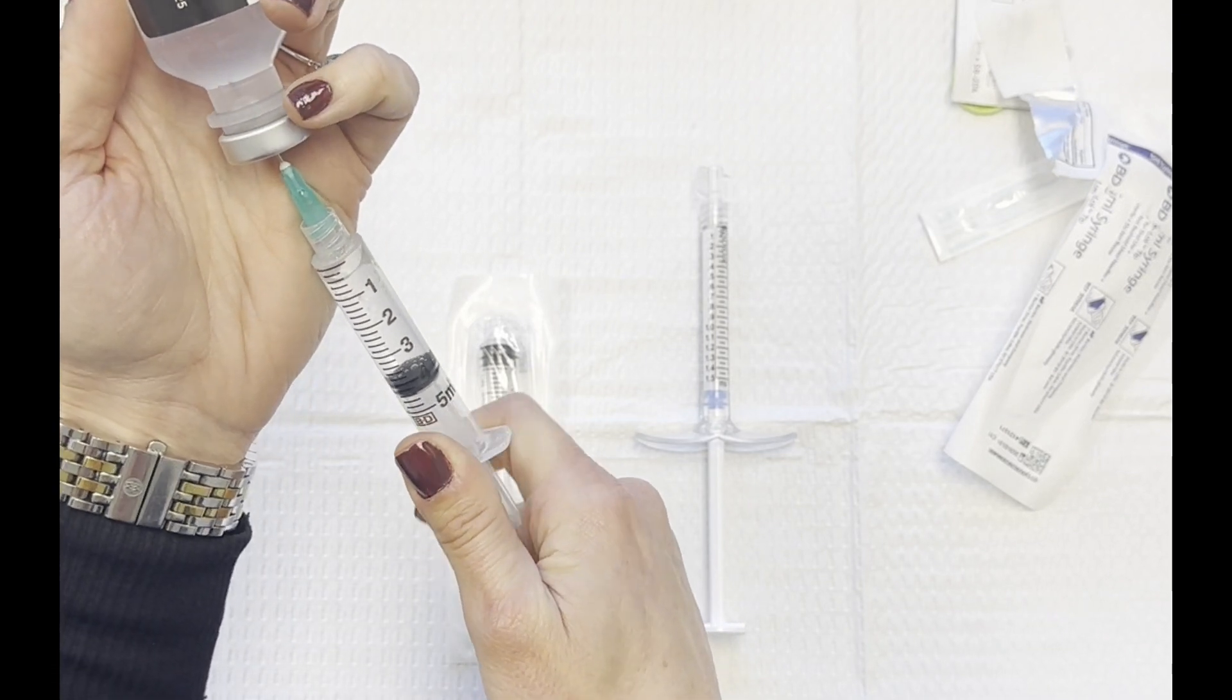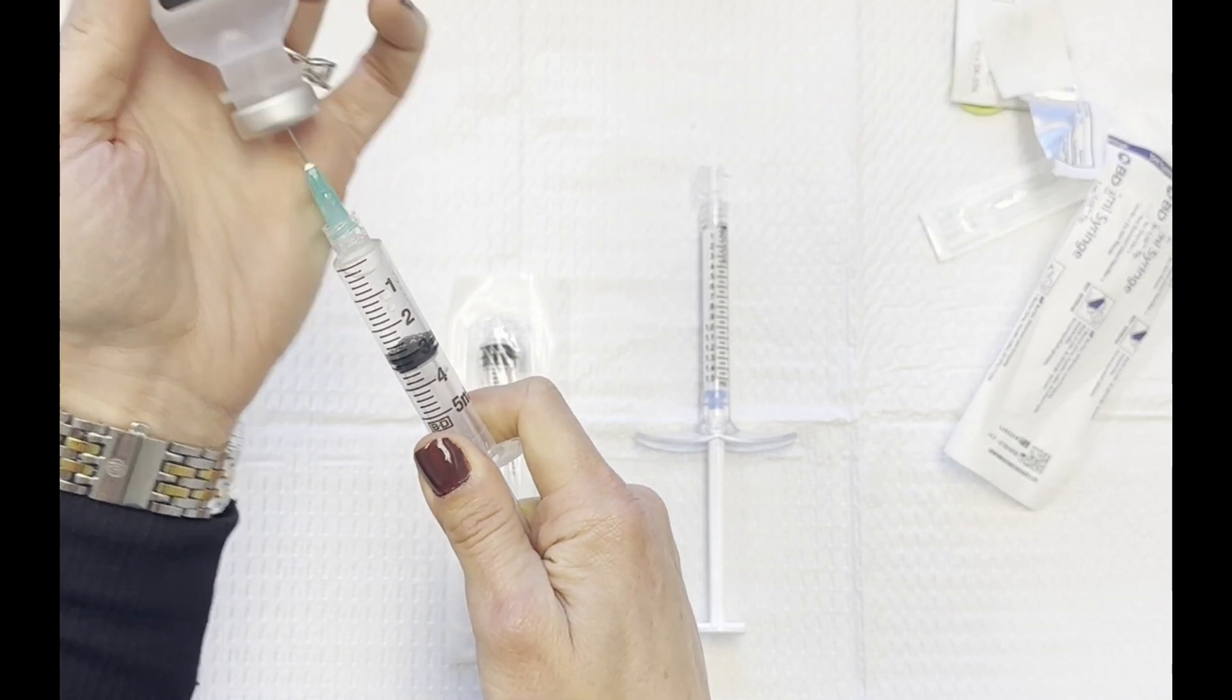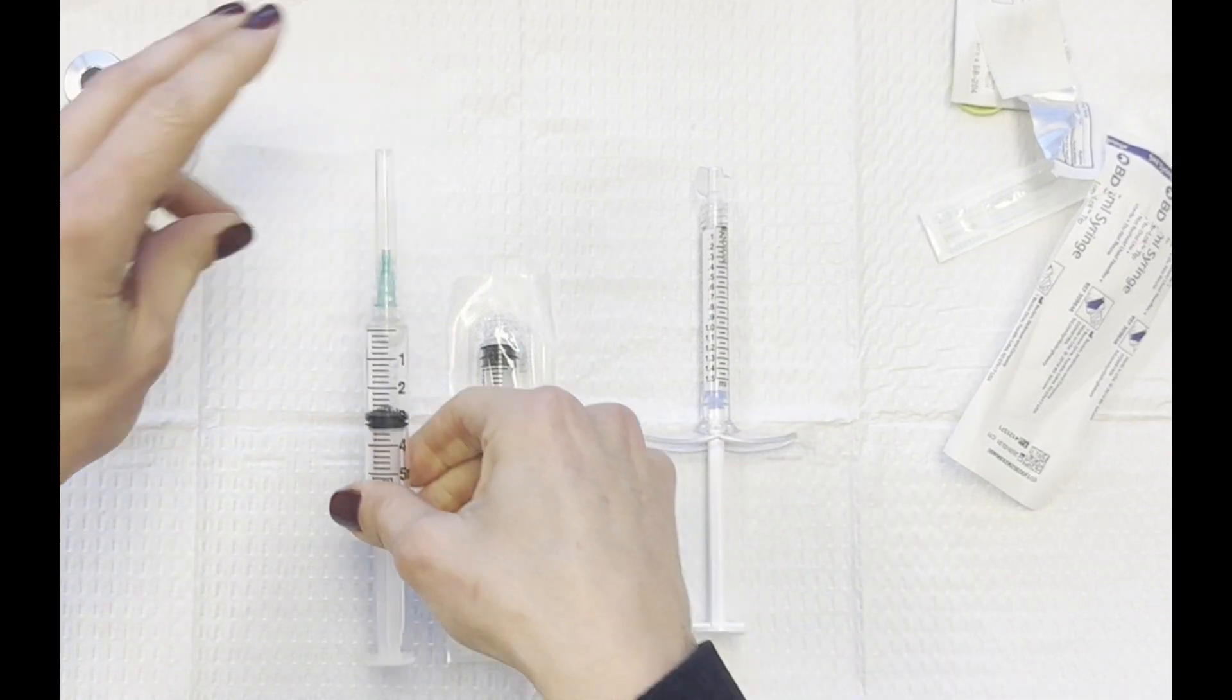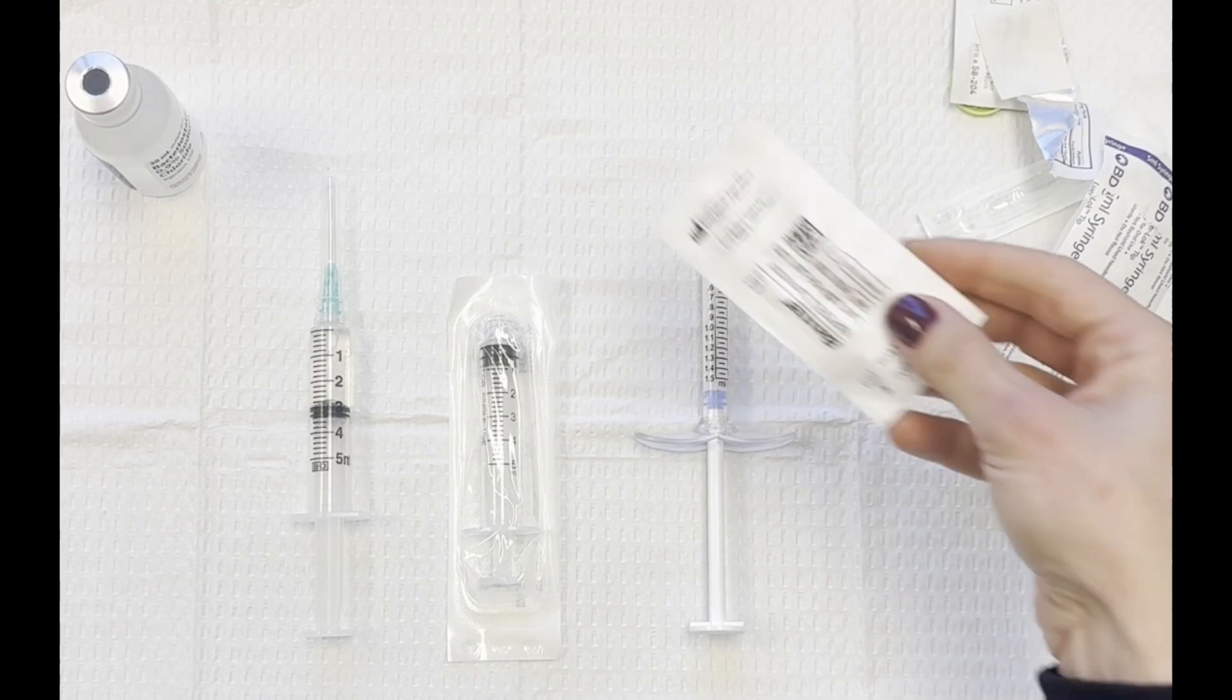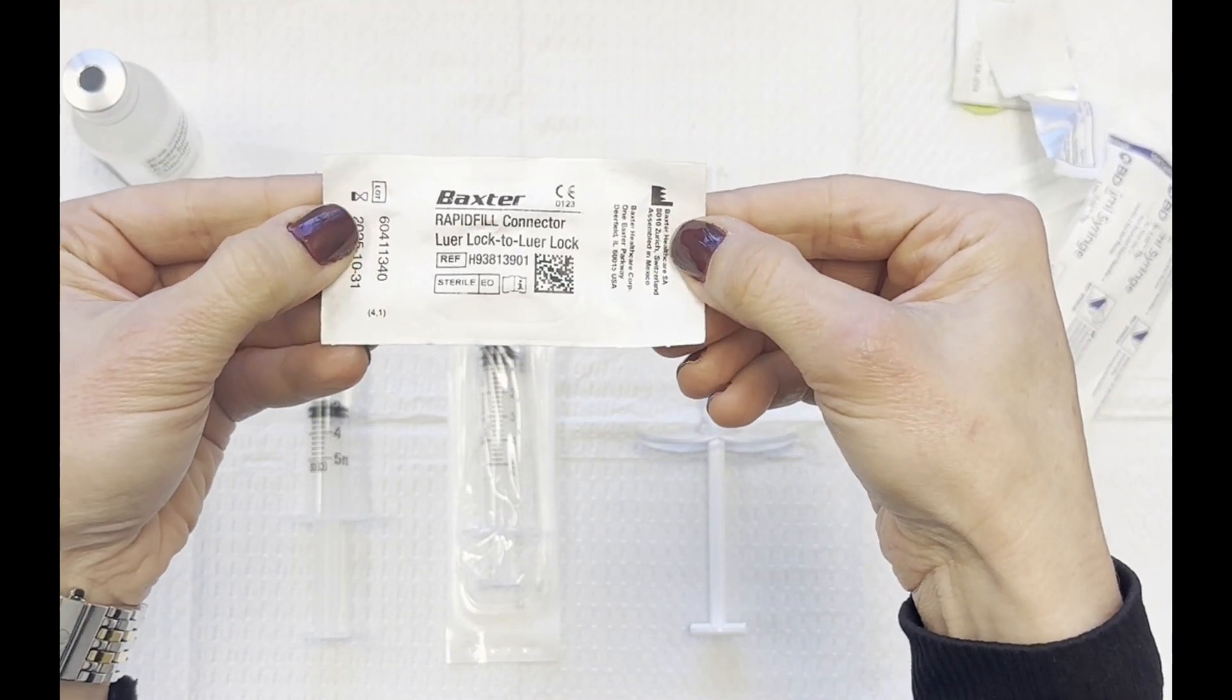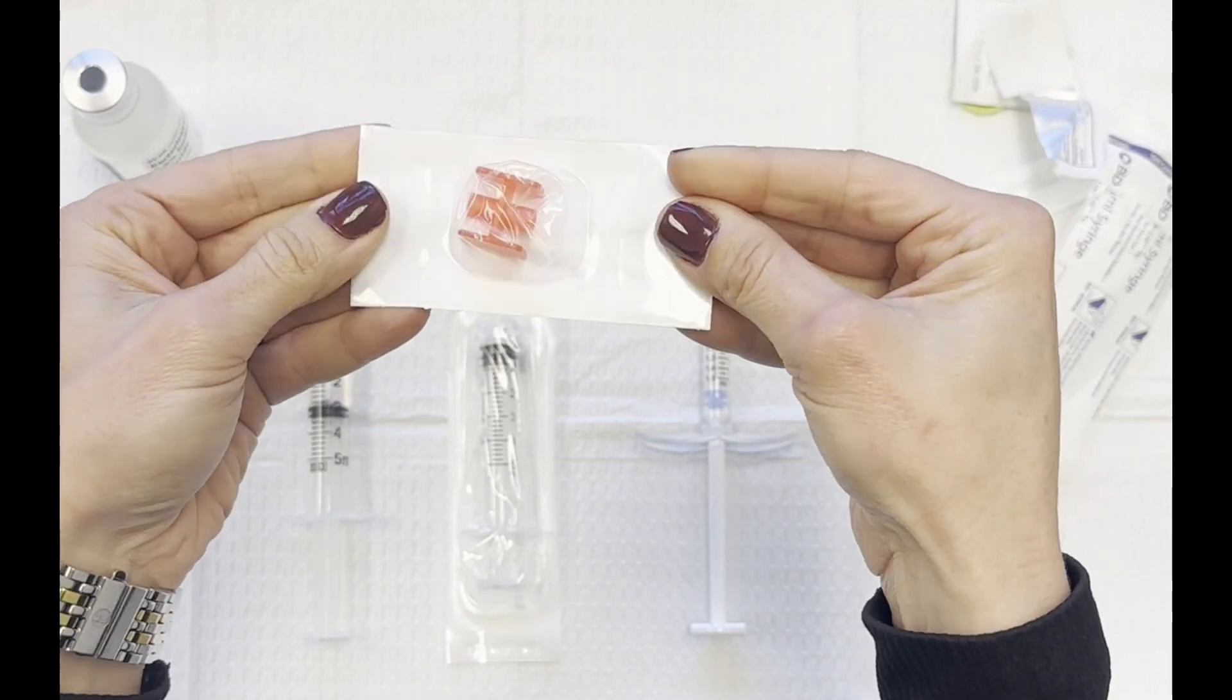And then I'm going to grab my Luer Lock, and these Luer Locks can be purchased directly from MERS, or you can get them separate. They're very cheap. So grab my little Mixer Luer Lock.